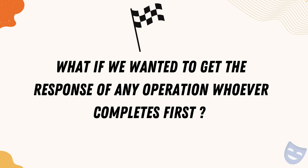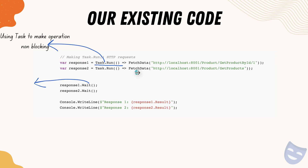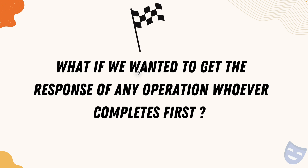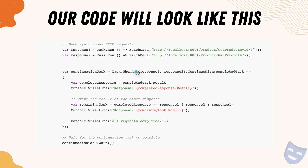What if we wanted to get the response of whichever operation completes first? All this time we've been seeing that for synchronous as well as non-synchronous code, we couldn't see any difference in the responses unless you see the non-blocking operation in the UI. Since we're not using any UI and keeping things simpler, we couldn't demonstrate that — so we're going to talk about what is called continuation.